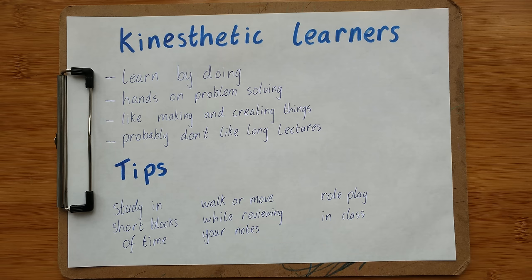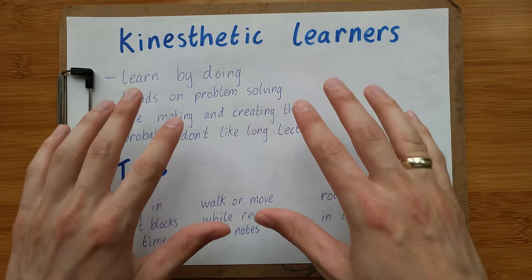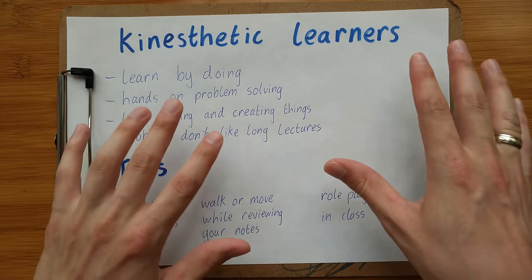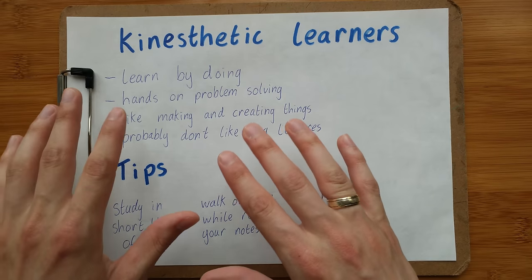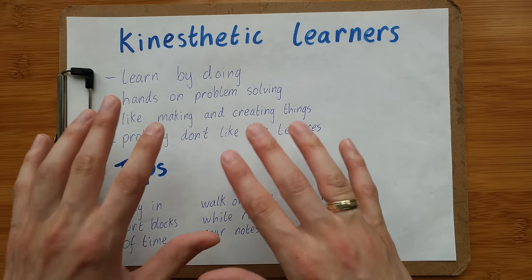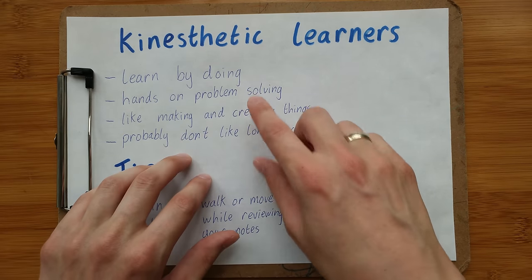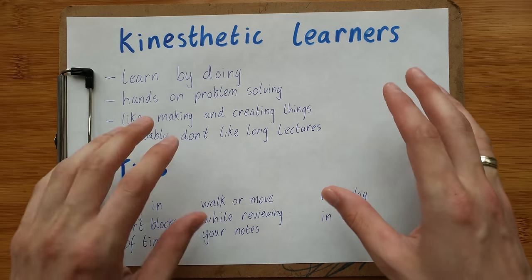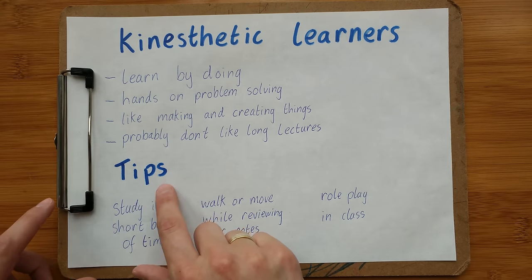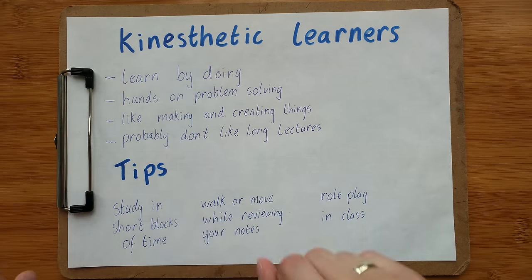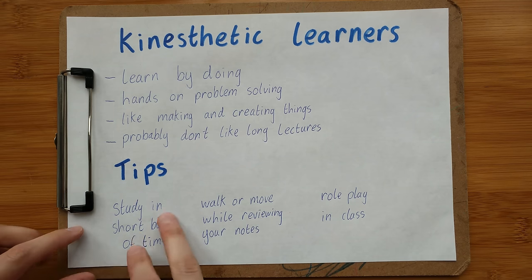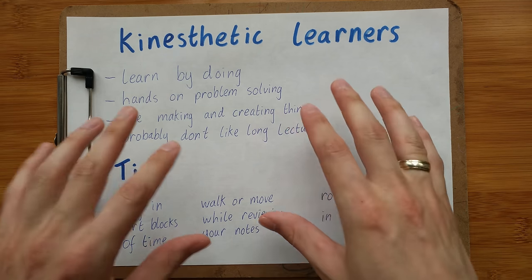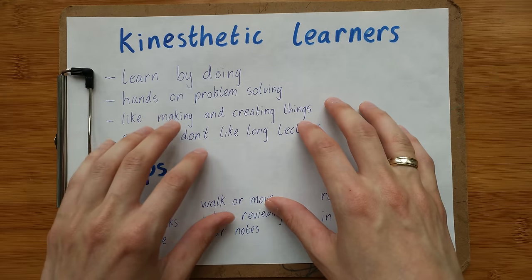A kinesthetic learner would prefer to go and fix the bike rather than reading a book about how to fix the bike. They'd like to learn by doing — they'd prefer to just try and learn as they go. Let's look at some tips for kinesthetic learners. One tip is studying in short blocks of time.